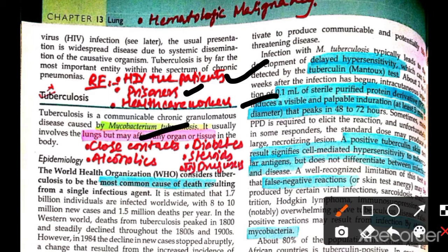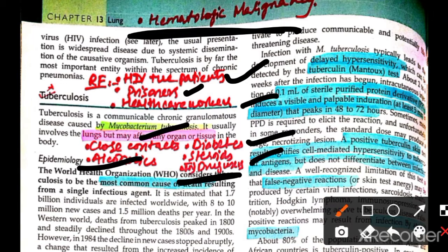Close contacts of TB patients are also at risk. Diabetics are considered immunocompromised. People taking steroids are immunocompromised. Alcohol and drug users are at risk, and patients with hematological malignancy — blood-related disorders — are also more susceptible.